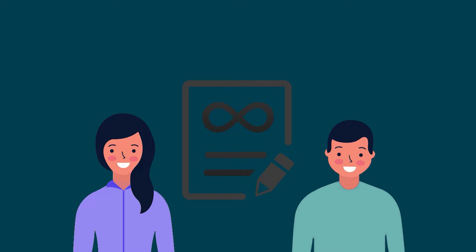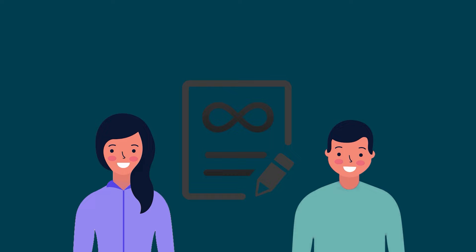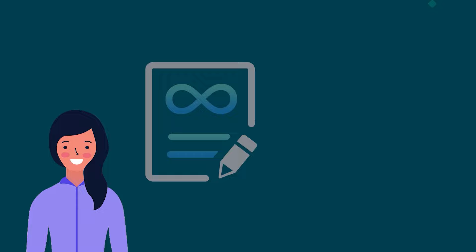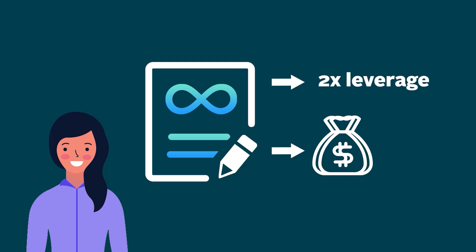Another thing about crypto derivatives like futures and perpetual contracts is that they offer leverage opportunities. This simply means it allows you to open a trading position that is bigger than your trading capital. In Mercy's case, if a derivative exchange offers two times leverage, her capital will double and so will her profit. However, just as leverage amplifies profits, it also amplifies losses, so there is a very high risk of being liquidated.